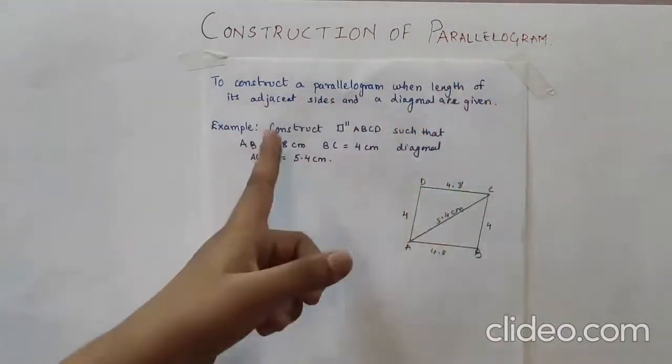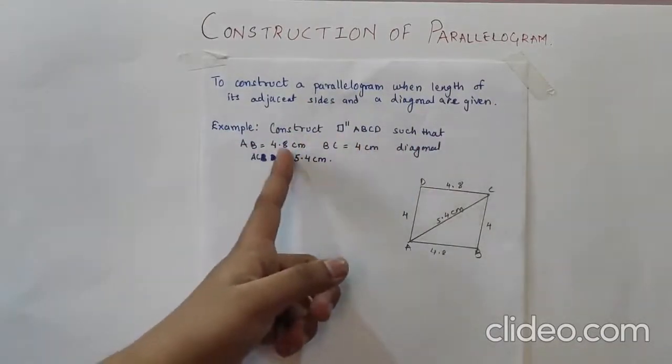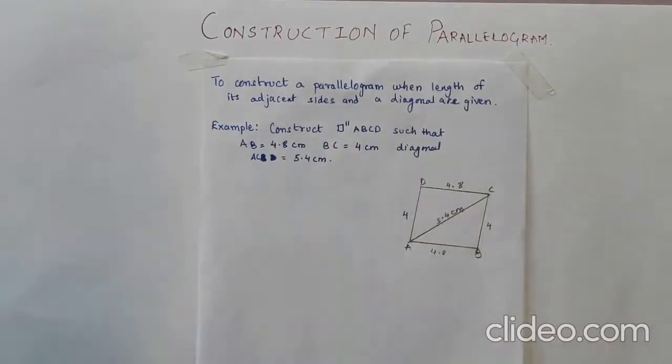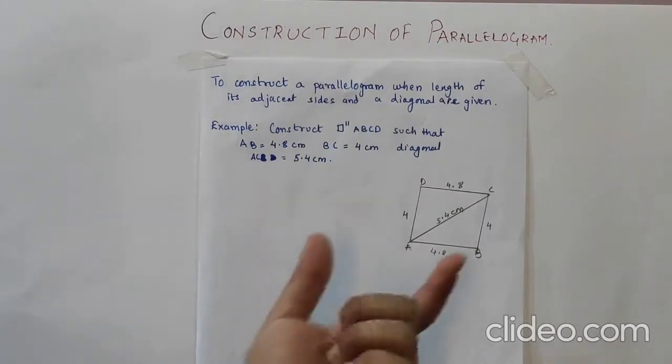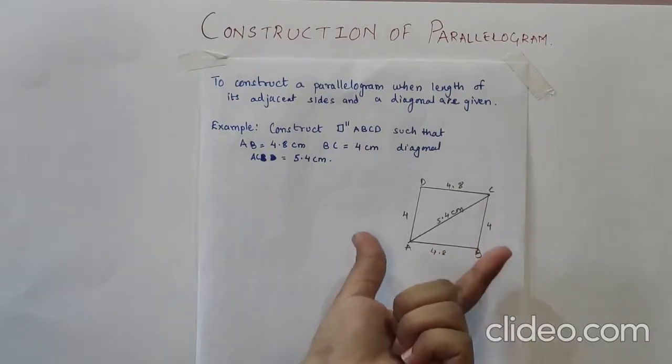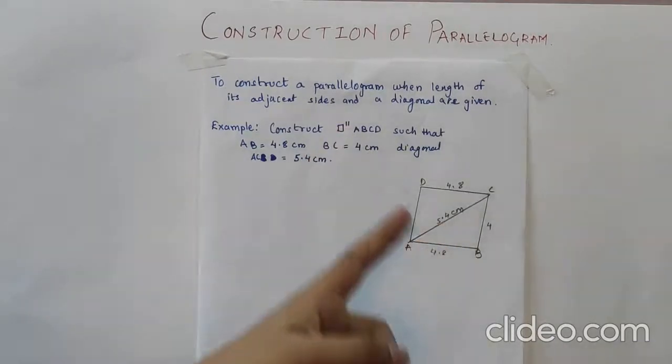For the example, construct parallelogram ABCD such that AB is 4.8, BC is 4 cm and the diagonal AC is given as 5.4 cm. Before we start with the actual construction, we have to always draw the rough figure so that we get an idea which step is to be done. So here is the rough diagram of this parallelogram.